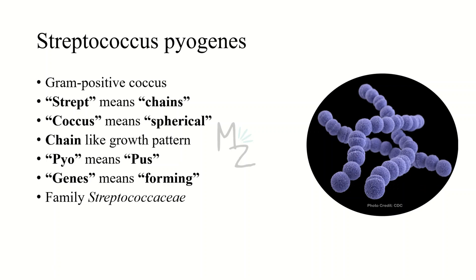Streptococcus pyogenes. It is a gram-positive coccus. The word streptococcus is made up of two words: 'strep,' which means chains, leading to its chain-like growth pattern or arrangement, and 'coccus,' which means spherical or round — as you can see in this picture, this bacterium is spherical. The second word, pyogenes, is also made up of two words: 'pyo' meaning pus, and 'genes' meaning forming. So this bacterium forms generations of pus.